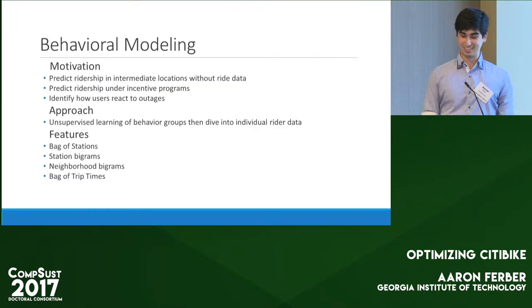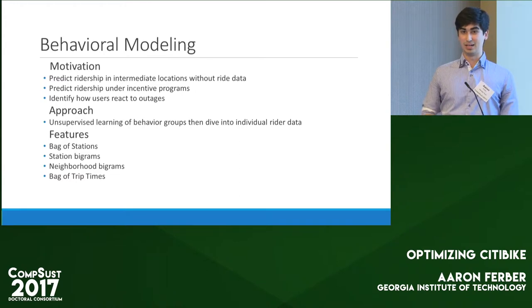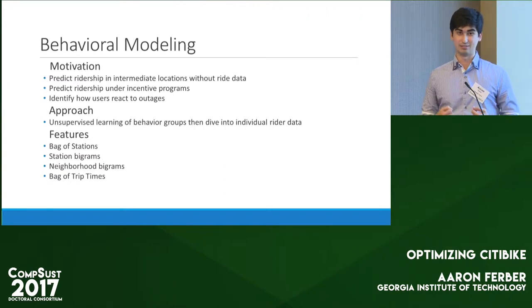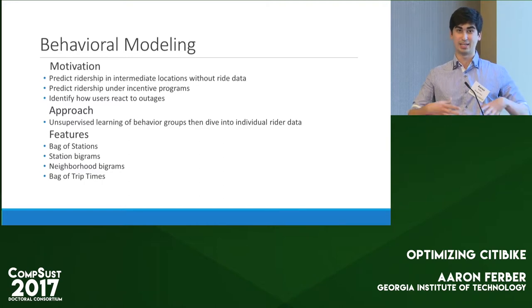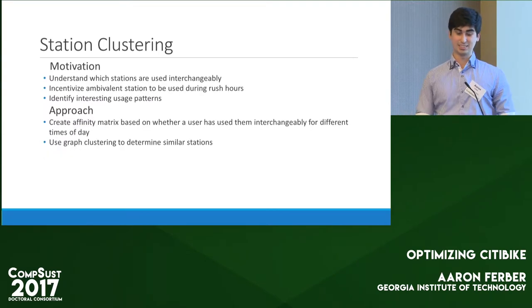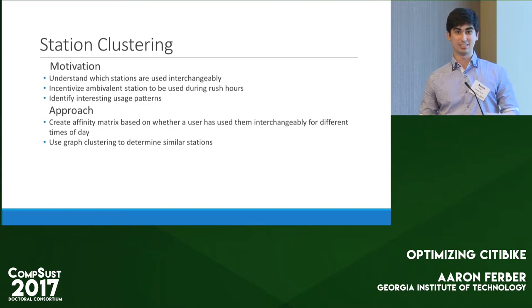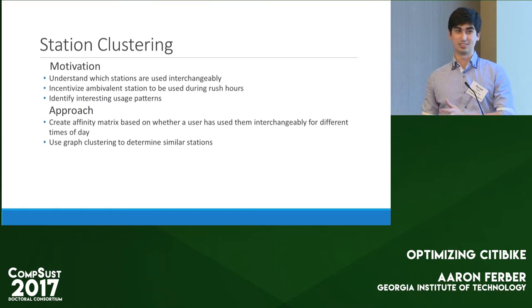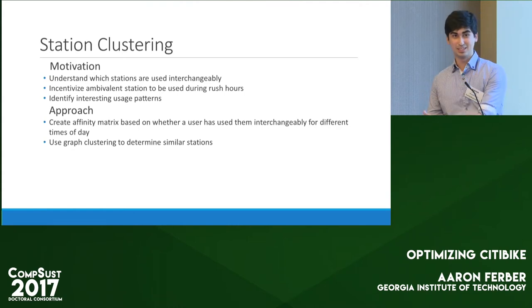The behavioral modeling was essentially a machine learning framework to determine different kinds of behaviors — different unsupervised classes of behaviors — and try to identify what semantic meaning is behind how different people use the system, then try to cater different incentive programs to these different classes of people. Similarly, station clustering was an unsupervised method of determining which stations could be interchanged with other stations, so if it was beneficial for a group of people to use a nearby station instead of the one they generally use, for the benefit of the system, we could send them to this alternate station instead.